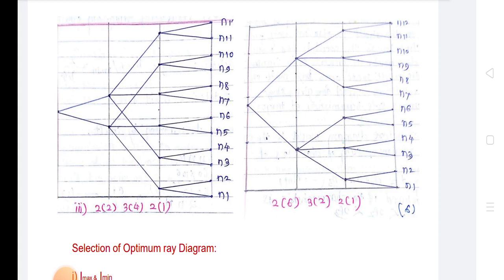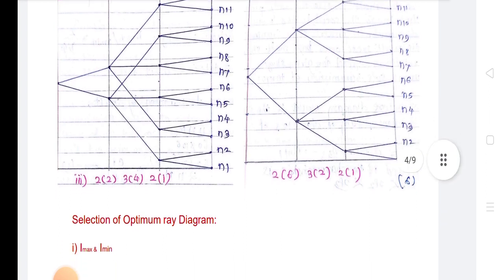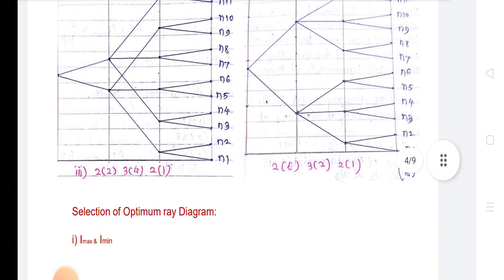For example, considering a 12-speed gearbox where Z = 12, we can express this as 2^n1 × 3^n2 = 12, where n = 3, meaning the number of stages where the transmissions are equal is 3.